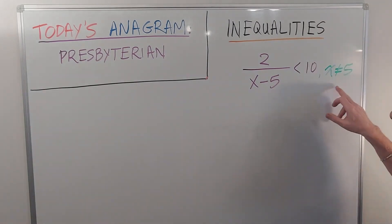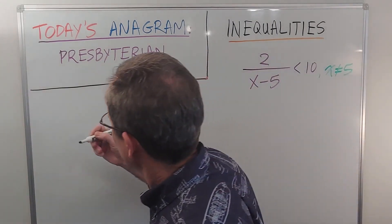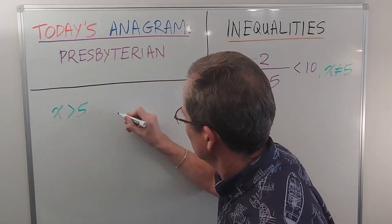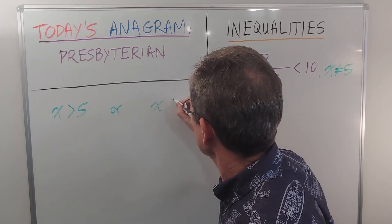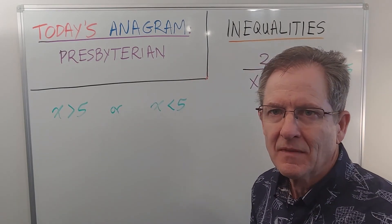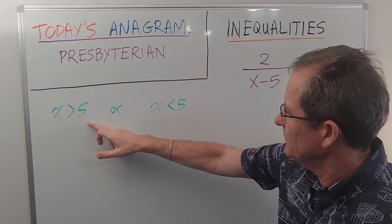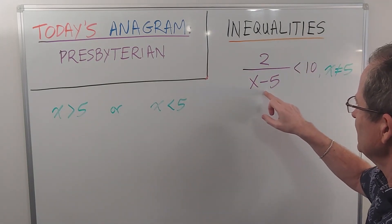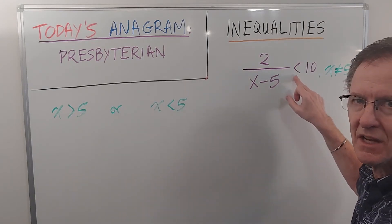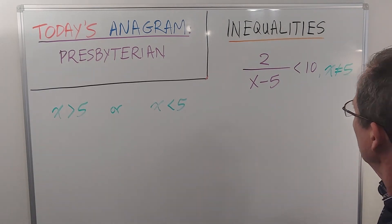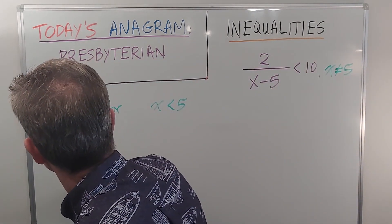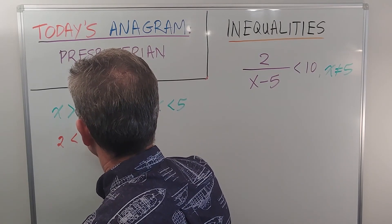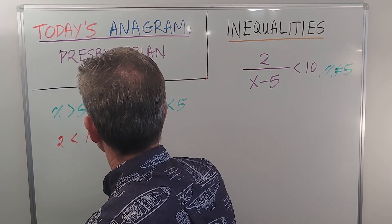So if x cannot equal 5, there's two cases. x could be greater than 5, or x could be less than 5. If x is greater than 5, then this is a positive quantity. So if I multiply both sides by x minus 5, this inequality does not change. So I'm going to get 2 is less than 10x minus 50.